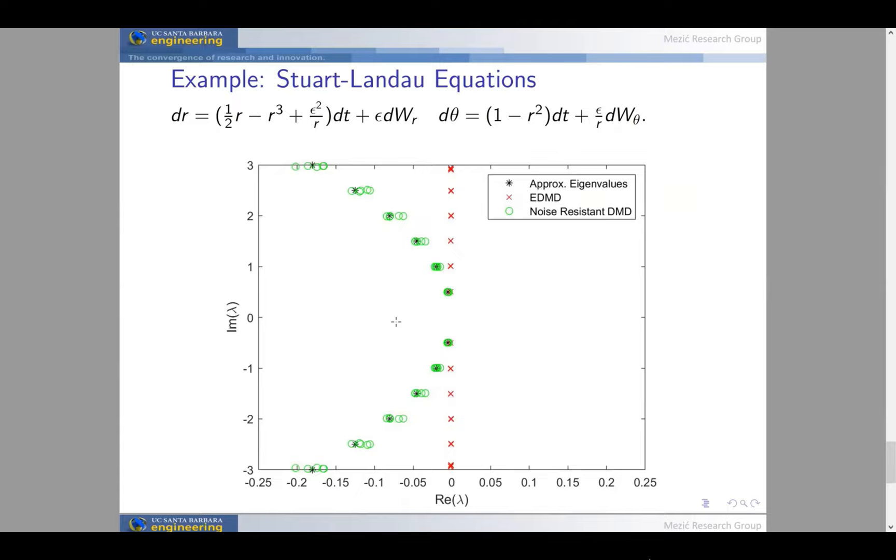An example for this system, we use the Stuart-Landau equations. These are a stochastic differential equation, but they also satisfy the properties we assume where the system is a time-homogenous Markov family, has an invariant measure and all that. We can see that once again, the noise-resistant DMD accurately captures the eigenvalues. Obviously, we haven't converged completely, but you can see that we're unbiased in our approximation, at the very least. Whereas EDMD, although it does seem to converge a bit quicker, it converges to the incorrect values where all the eigenvalues are along the imaginary axis when the true eigenvalues are actually in the left-hand of the plane.